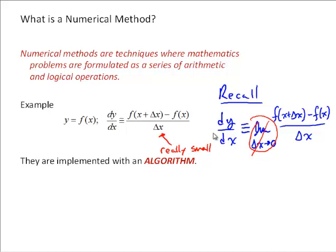So basically what we've done here is dropped the limit and just use a delta x that's really small. And in so doing, we can approximate the derivative by using simple arithmetic. Here we have an addition, a subtraction, a couple function evaluations, and a division.